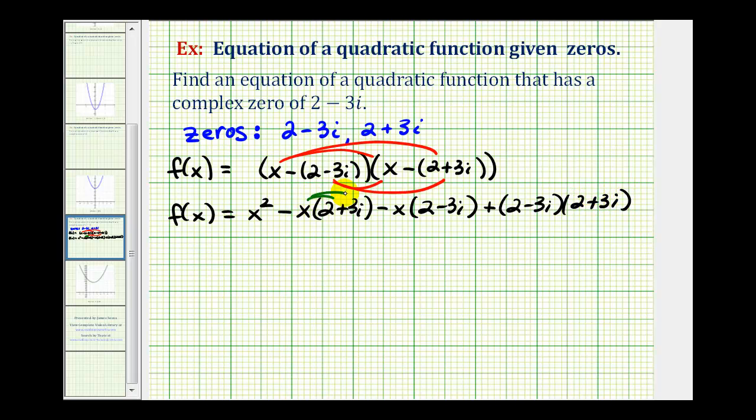Now we'll distribute here, and we'll have four more products. So we'll have x² - 2x - 3xi - 2x + 3xi. And then here, these are conjugates. We'll have 2 times 2 is 4. The next two products should be opposites: 2 times 3i is +6i, and -3i times 2 is -6i. And then we'll have -9i².